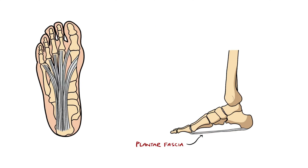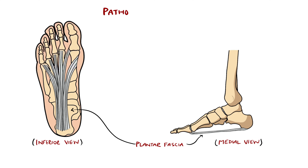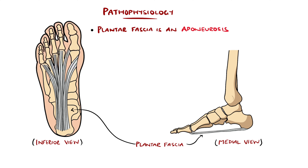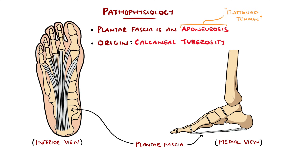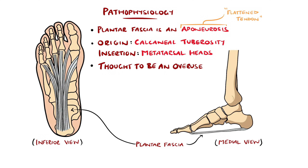More specifically, the plantar fascia has been described as an aponeurosis, meaning a flattened tendon. It originates from the medial aspect of the calcaneal tuberosity in the heel and attaches to the base of the toes, the metatarsals. Plantar fasciitis has typically been considered an overuse injury.